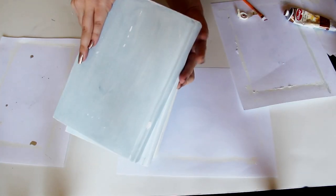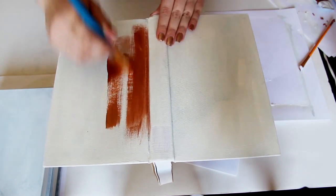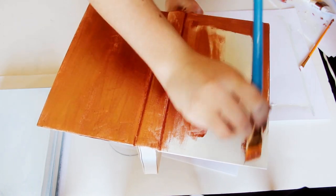So once that was dry I went ahead and opened up the books on top of some drinking glasses so I could paint the cover and the spine. And I decided to go with a metallic bronze paint.